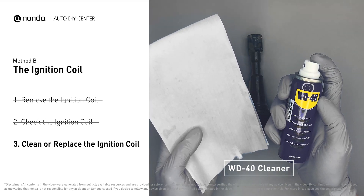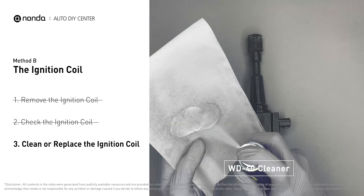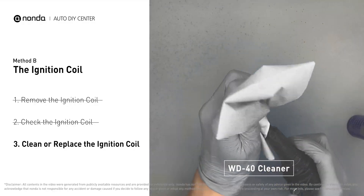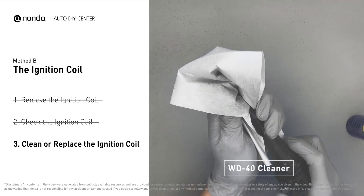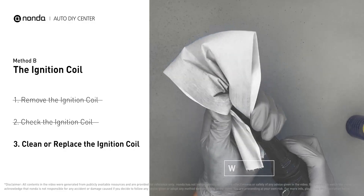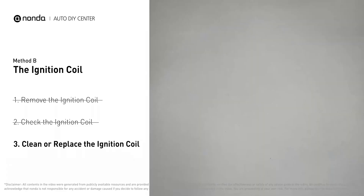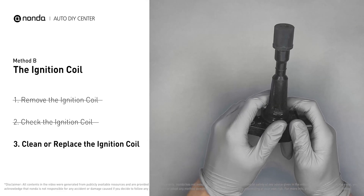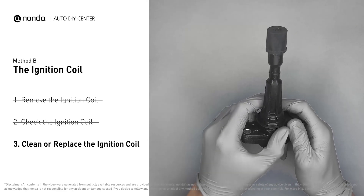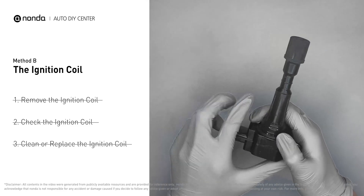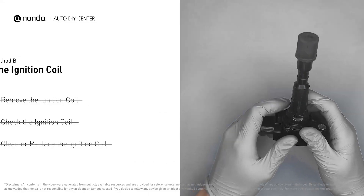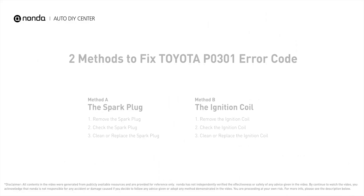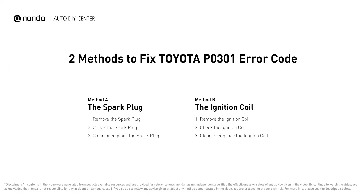If the ignition coil is covered with engine oil or stains, simply clean it with a WD-40 cleaner. Otherwise, replace the damaged ignition coil with a new one. Those are the two most practical solutions to fix Toyota's P0301 error code.